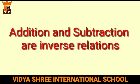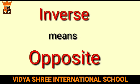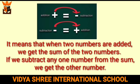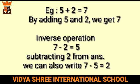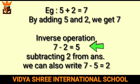Addition and subtraction are inverse operations — inverse means opposite. When two numbers are added we get their sum, and if we subtract any one number from that sum, we get the other number. For example, 5 plus 2 equals 7. Using the inverse operation by subtracting 2 from 7 gives us 5, and 7 minus 5 gives us 2.